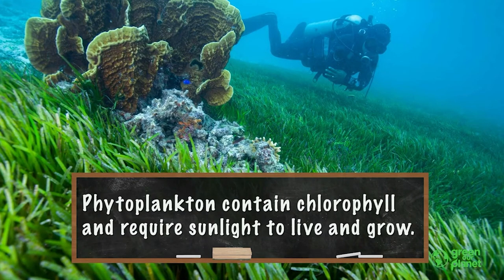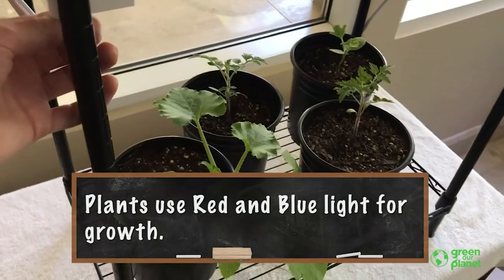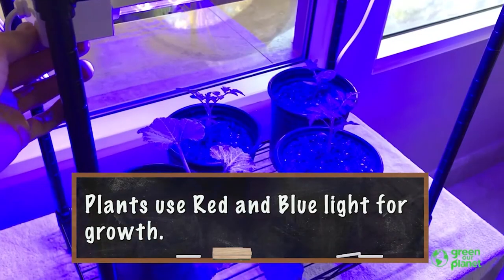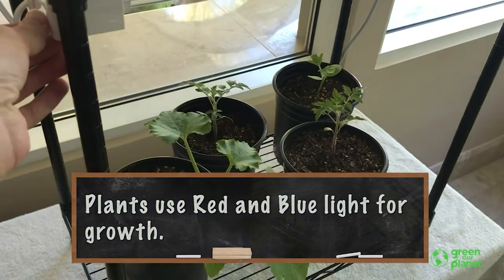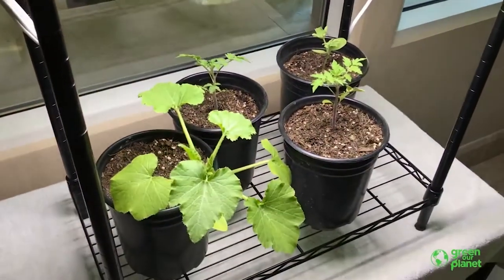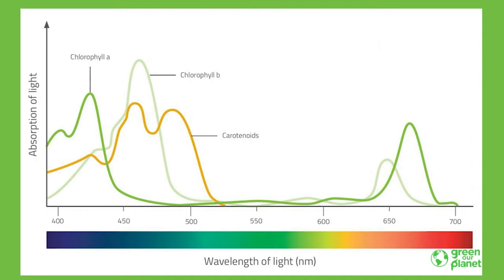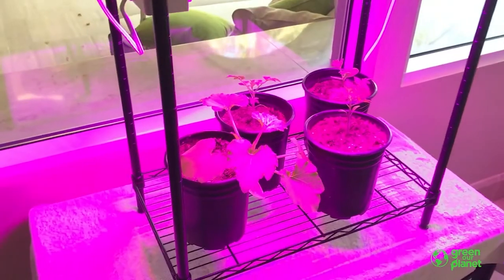Plants really only use two colors for their growth: they use red, and they also use blue. They actually don't use green or yellow too much — that's why they look green and a bit yellow, because those are the colors they're actually reflecting and not using. You can see LED lights here; they actually provide just the colors that plants are using — the red and the blue — and that kind of gives the pinkish color that you see there.